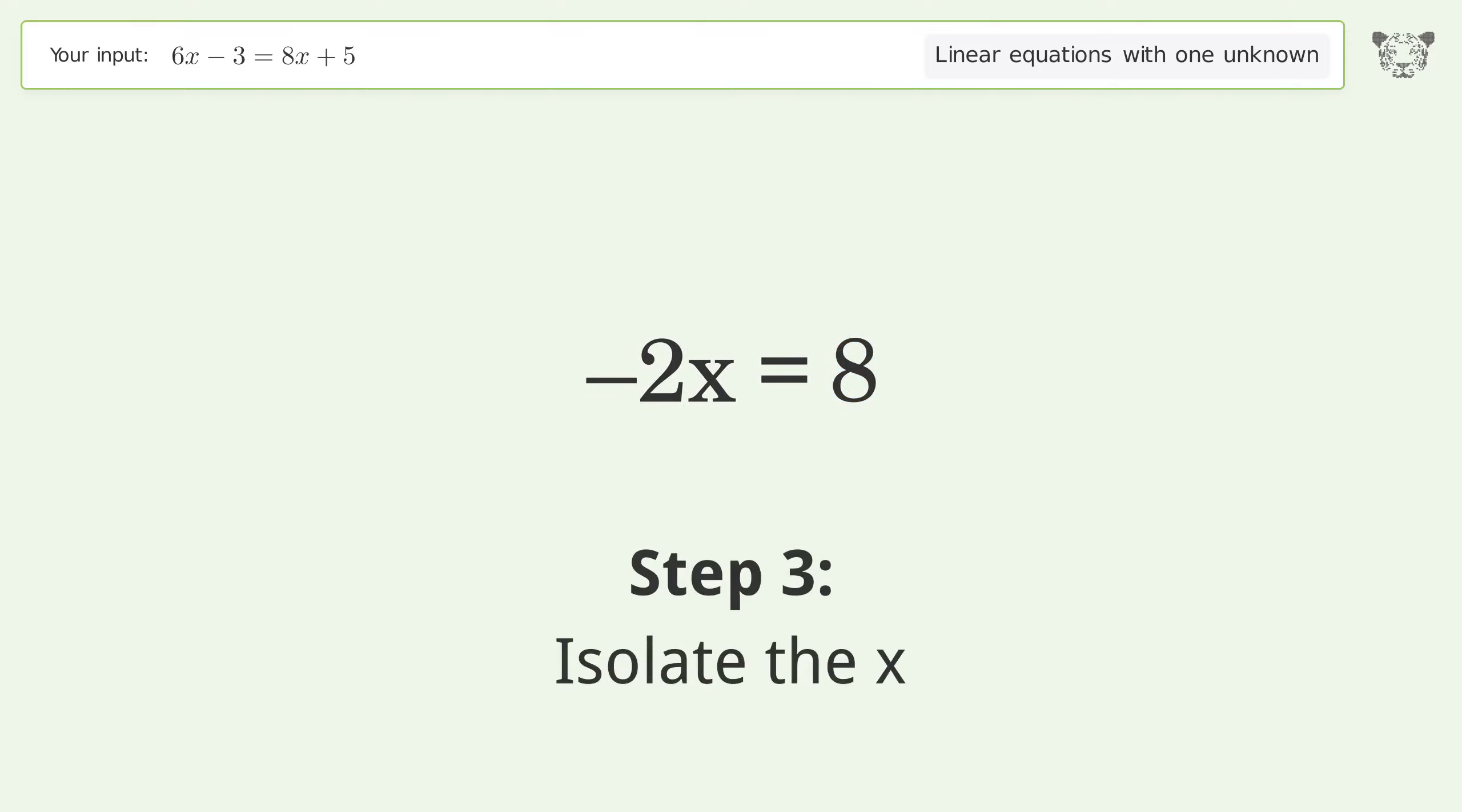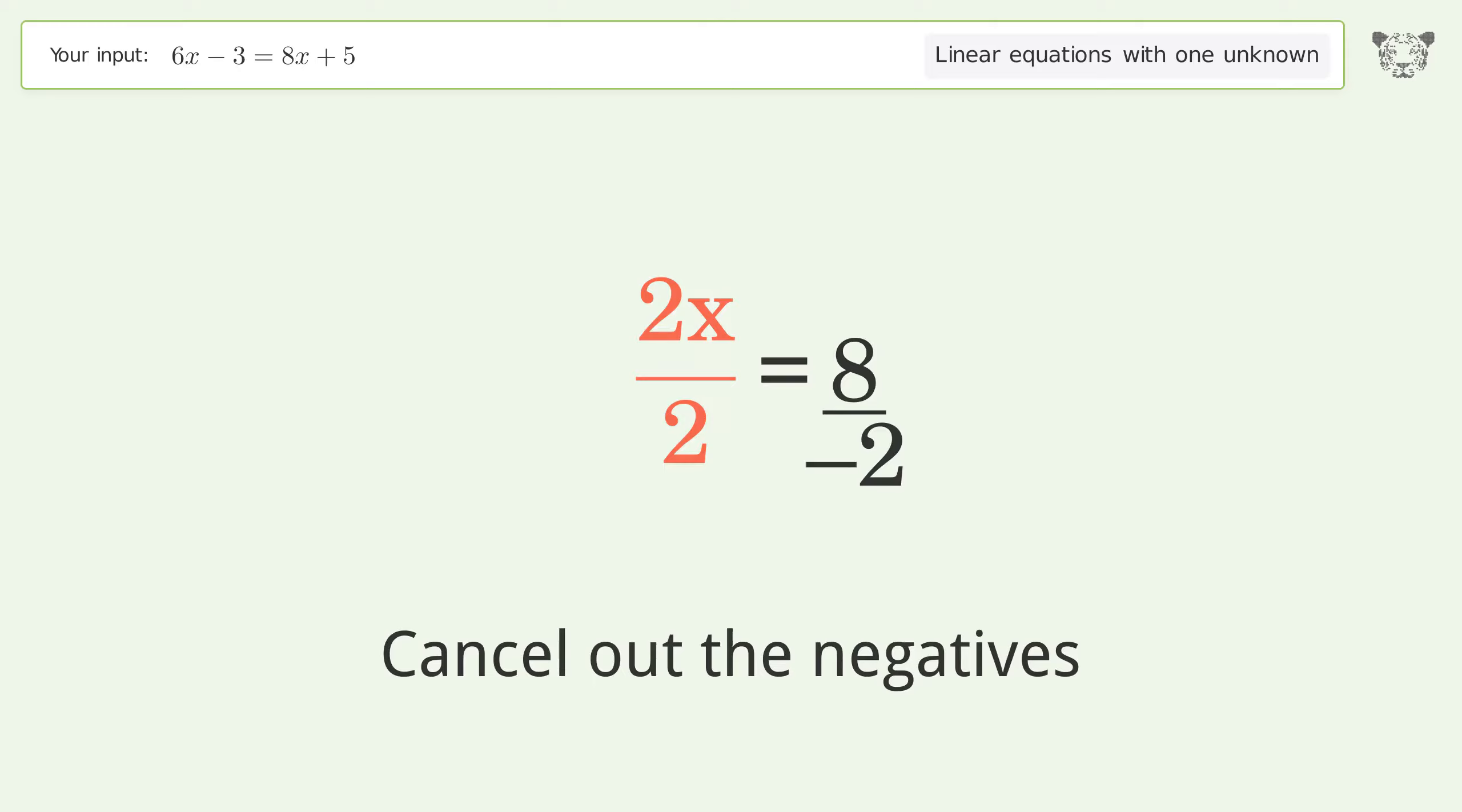Isolate the x. Divide both sides by negative 2. Cancel out the negatives. Simplify the fraction.